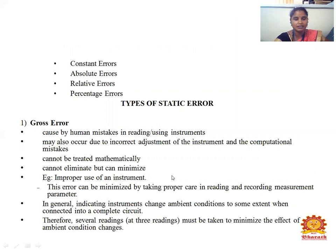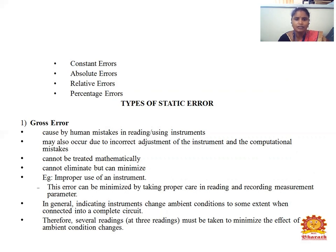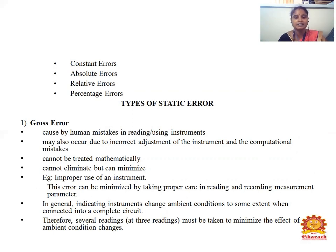First, gross error. Gross error is caused by human mistakes in reading or using instruments. For example, in a lab a reading may be 8.5 meters but a human may misread it as 8, causing variation in readings. It may also occur due to incorrect adjustment of the instrument and computational mistakes. It cannot be treated mathematically — it cannot be eliminated but can be minimized. This error can be minimized by taking proper care in readings and recording measurement parameters. Several readings must be taken to minimize the effect of changing conditions.